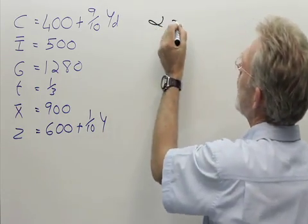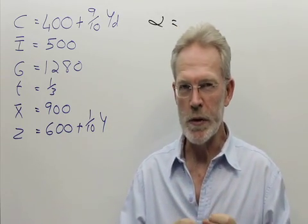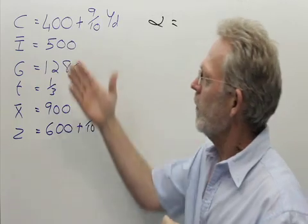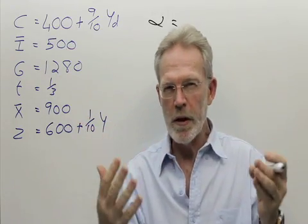Before we can calculate the multiplier, we must decide which variant of the multiplier we must use. Given the information, are we working with an open or closed economy?